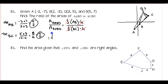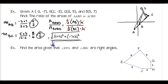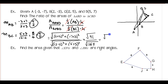Using the distance formula: AB equals the square root of (2 plus 3) squared plus (negative 7 plus 3) squared, which simplifies to the square root of 41. BC equals the square root of (12 minus 2) squared plus (5 plus 3) squared, which simplifies to the square root of 164. Since 164 equals 4 times 41, that's 2 times the square root of 41. The square roots of 41 cancel, leaving a ratio of 1 to 2.